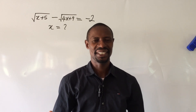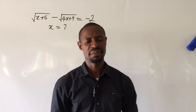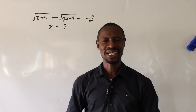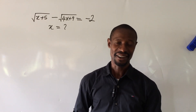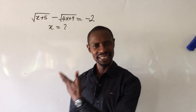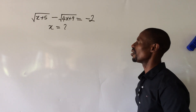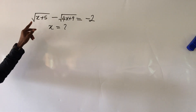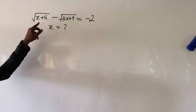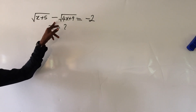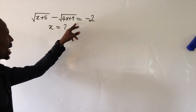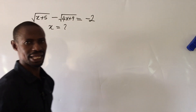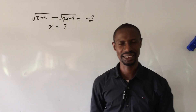Welcome to All-I-Mans TV. My name is Rimes Jix and this is a channel where you learn mathematics every day. Here we have a challenge on a radical equation: root(x + 5) minus root(4x + 9) equals minus 2. What will be the value or values of x?